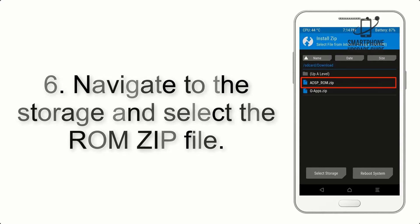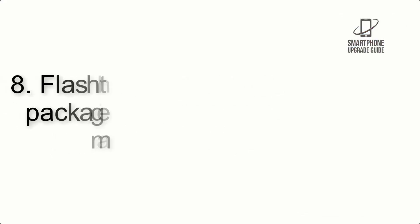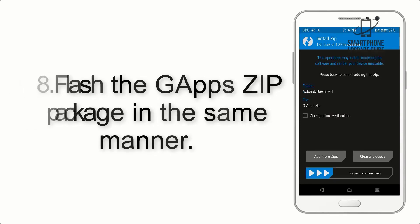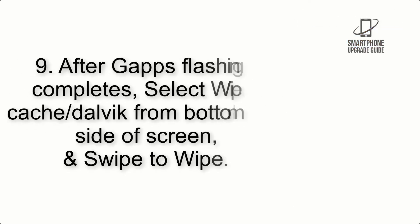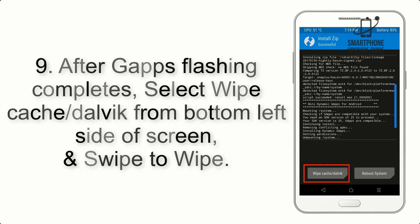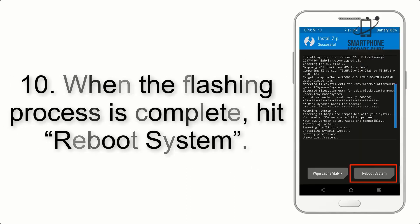Step 6: Navigate to the storage and select the ROM zip file. Step 7: Swipe the button on the screen to install the ROM file. Step 8: Flash the GApps zip package in the same manner. Step 9: After GApps flashing completes, select Wipe Cache and Dalvik from the bottom left side of the screen and swipe to wipe.